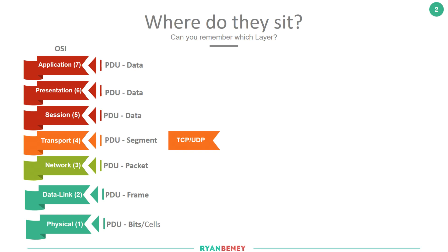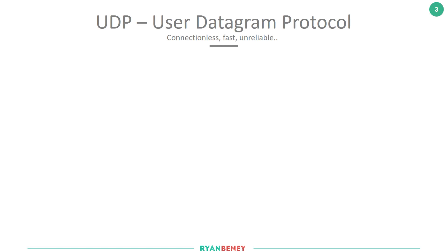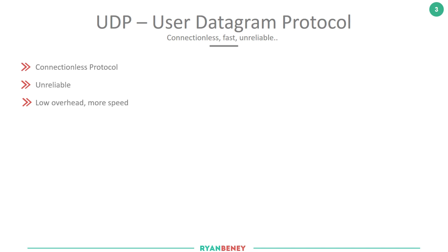We're going to jump in and have a comparison between the two protocols. Starting with UDP, the User Datagram Protocol. First of all, it's a connectionless protocol, and because it's connectionless it's an unreliable protocol. Because it doesn't have the ability to be connection-oriented and it's not reliable, we can actually have lower overhead — meaning a smaller PDU — and because it's smaller it tends to offer more speed.